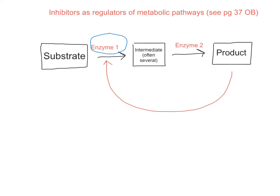It makes sense to inhibit the first enzyme in that sequence, and that's quite often what you see. In this case, we've got our product — whatever the end product is — and that end product, when it gets too high, will generally inhibit chemical reactions by non-competitive inhibition.